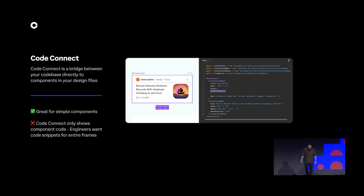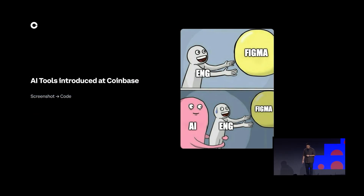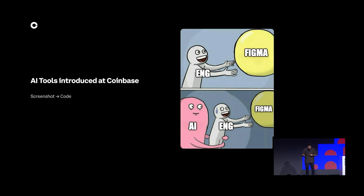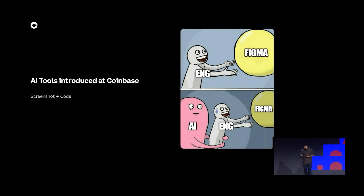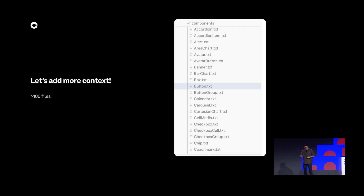While Code Connect works really well for components, engineers wanted code for entire frames. Then something else happened at Coinbase: the introduction of AI tools like Cursor and Claude Code. While there was a lot of initial excitement, we soon started seeing a pattern of questions being asked in our internal Slack channels. These AI agents are really eager to satisfy your prompts and often lead to hallucinations — making components that don't exist or creating props out of thin air, ultimately straying away from your design system.